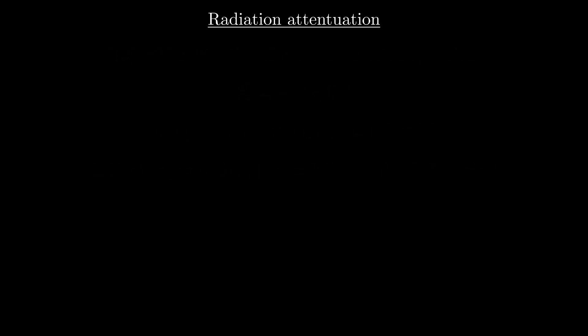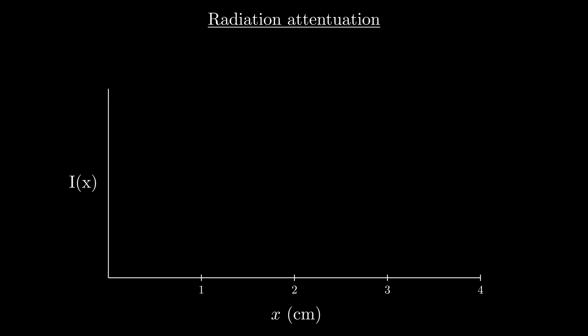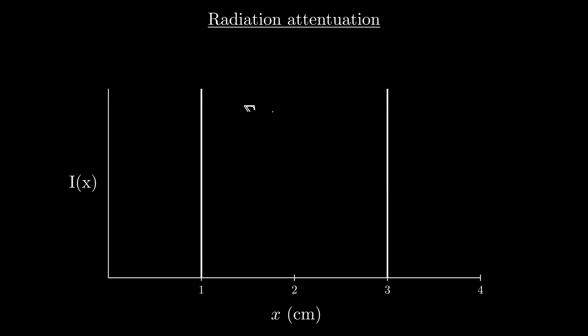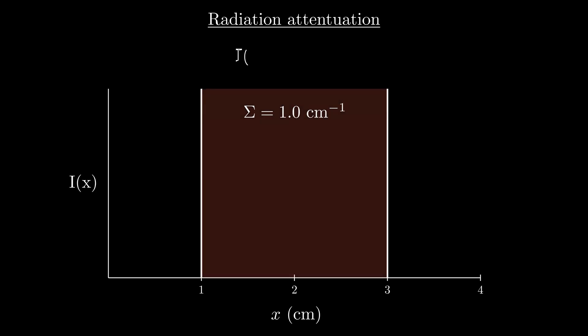Here's an example of how this would play out for a 2 centimeter thick slab with a macroscopic cross section of 1 inverse centimeter. The intensity of the beam prior to the slab is constant, since it isn't interacting with anything. Then once it hits the slab, we see the intensity fall exponentially. Once the beam exits the slab, the intensity once again remains constant.